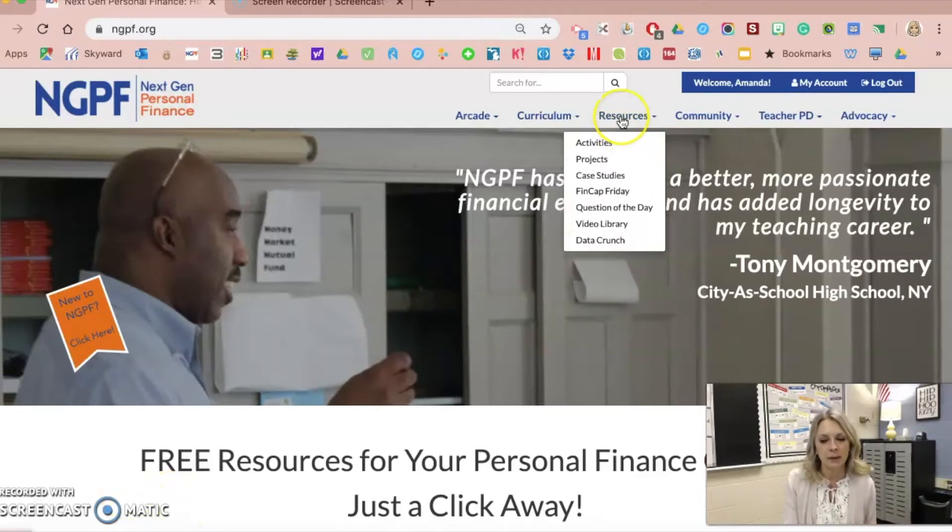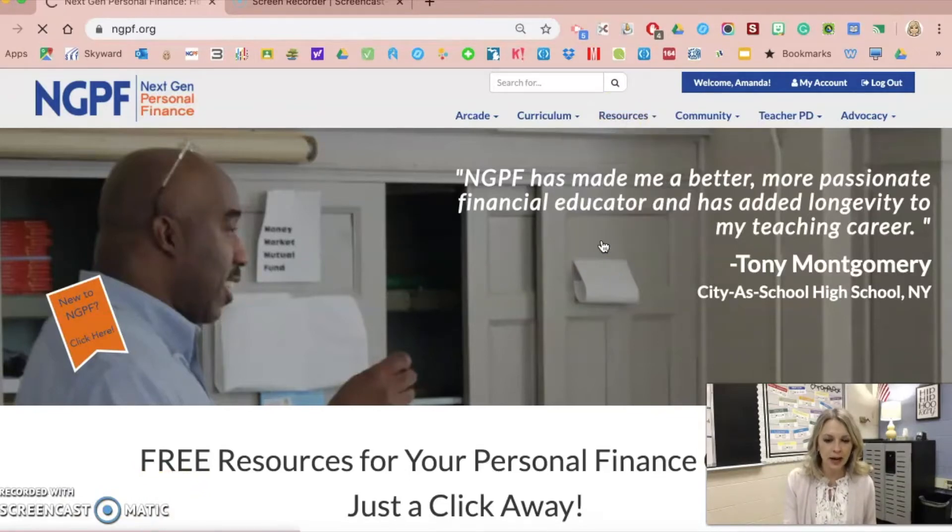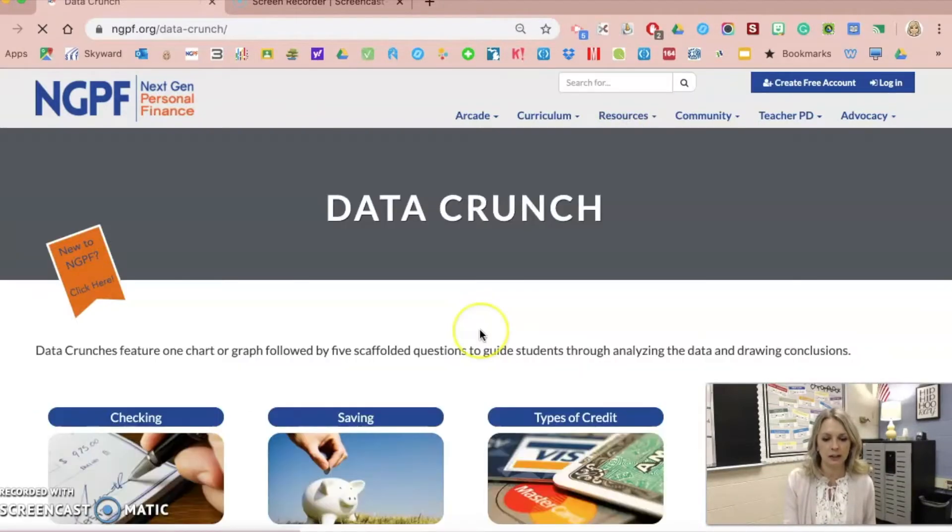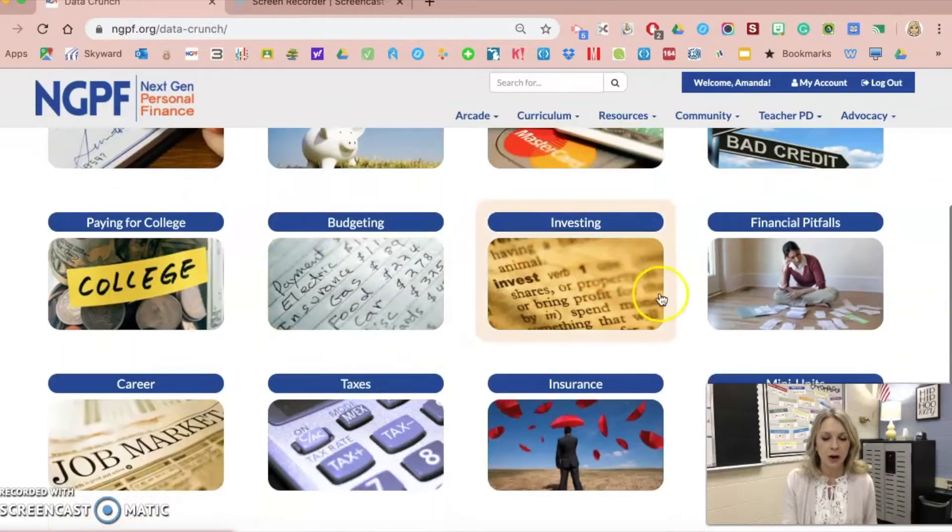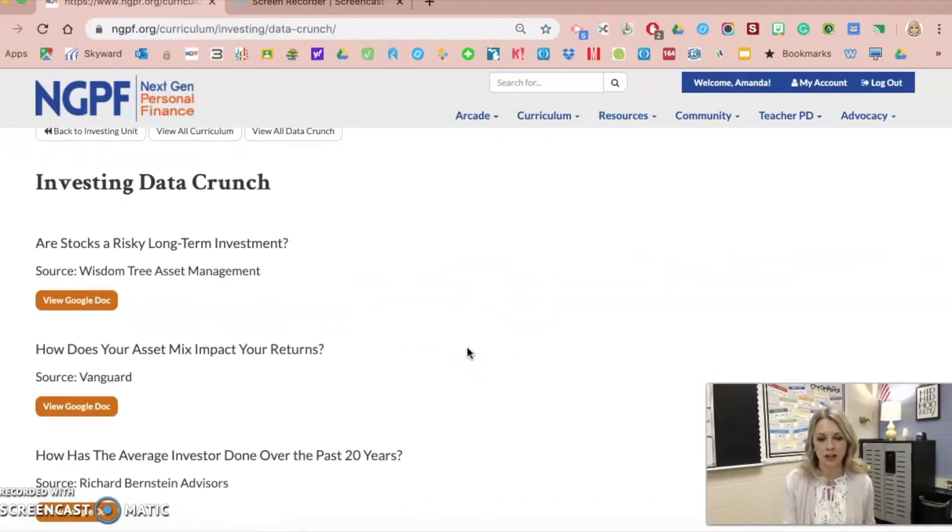Under the resources tab on the NGPF website there is data crunches, and if you go to that particular page on the NGPF website they offer data crunch activities in every unit. I'm currently in my investing unit right now, so if I go to investing, it's going to list a bunch of different data crunch activities.